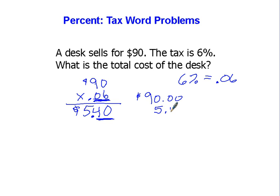So I always stop and think, does that amount of tax make sense? Then we add the tax to the original price of the item, zero, four, point, five, and nine. And the answer would be $95.40.